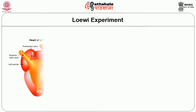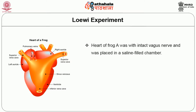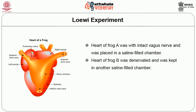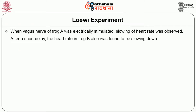So what is that experiment? Otto Loewi used two frogs for this experiment. The heart of frog A was with an intact vagus nerve and was placed in a saline-filled chamber. The heart of frog B was denervated and was kept in another saline-filled chamber. Both chambers were connected such that the fluid from the chamber of frog A could flow into the chamber of frog B. When the vagus nerve of frog A was electrically stimulated, slowing of heart rate was observed.